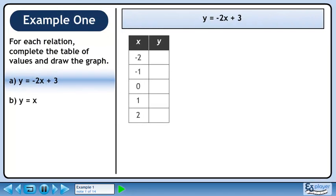For each relation, complete the table of values and draw the graph. In Part A, we are given the relation y equals minus 2x plus 3.